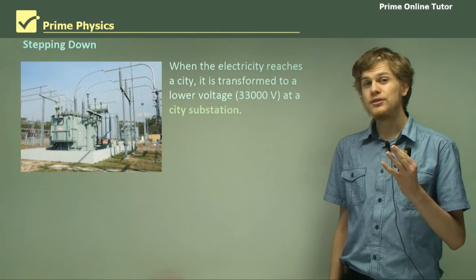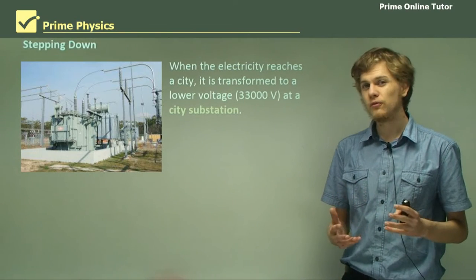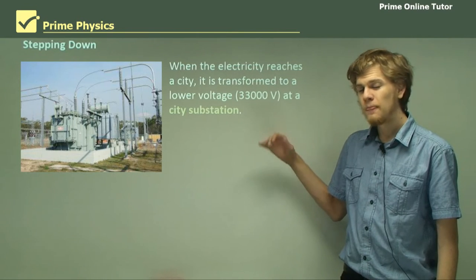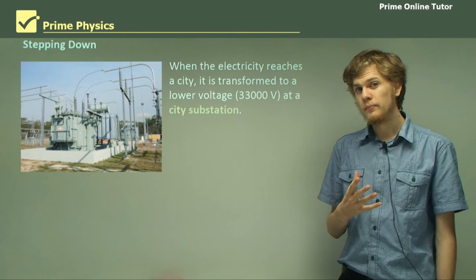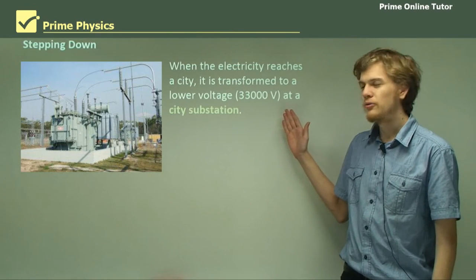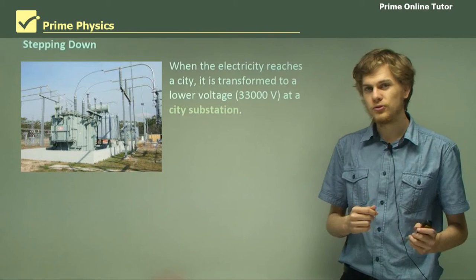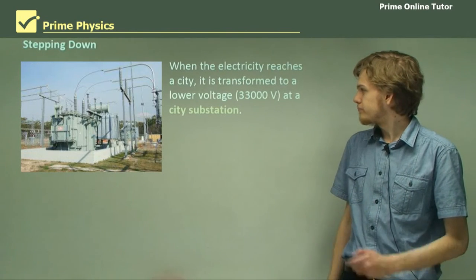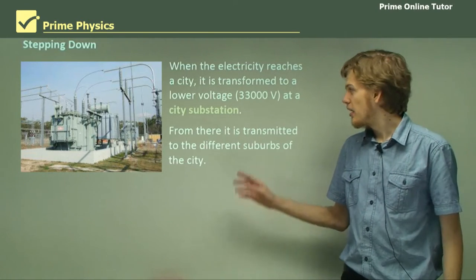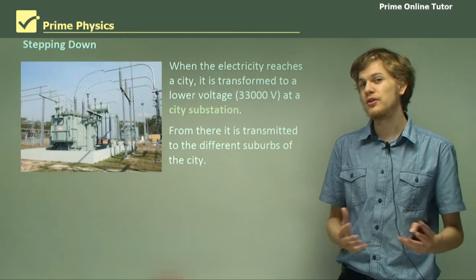Now when the electricity reaches a city, we don't want to be carrying it around 330 kilovolts anymore. So at a city substation, a step down transformer transforms electricity to a more manageable 33,000 volts. From there it's transmitted to various different areas in the city at high voltage power lines that are not quite as high as the power lines crossing the country.